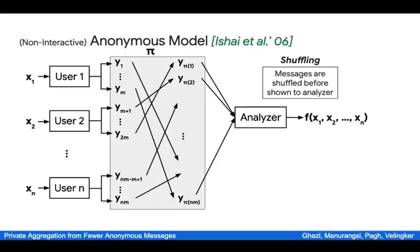The distinguishing feature of this model is that the messages sent to the analyzer are anonymous, meaning the analyzer can only see the message content but not the sender identity. Equivalently, we can think of this as if there is a shuffler in the middle that shuffles the messages in random order before revealing them to the analyzer. This leads some to call this model the shuffle model, especially in the differential privacy literature.